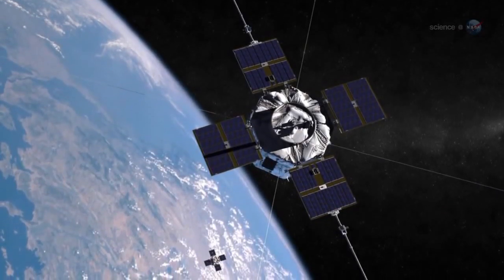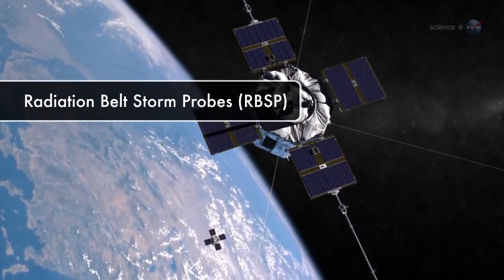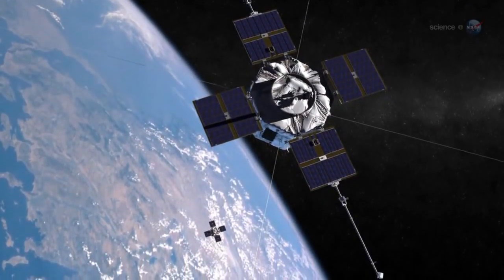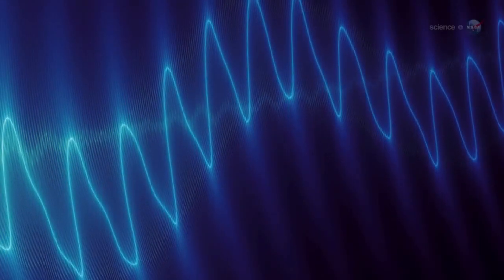Now, NASA's twin radiation belt storm probes are traveling through the region of space where Chorus actually comes from, and the recordings are out of this world. This is what the radiation belts would sound like to a human being if we had radio antennas for ears.